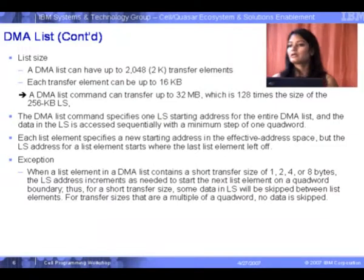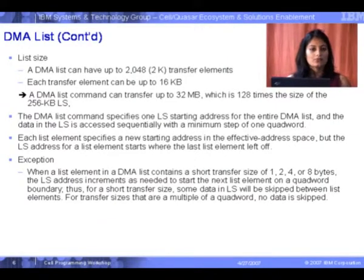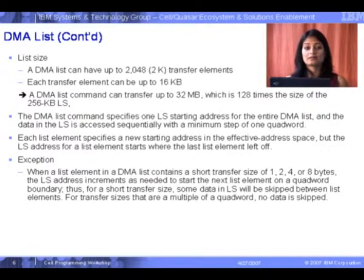It's a streaming model because the local store size is only 256 kilobytes, so you can't fit all that data in the local store. But via a DMA list, it can access as much as 32 megabytes of data, collected asynchronously in the background. You specify the starting effective address where data collection begins, and that offset keeps incrementing. Any DMA list can transfer 1, 2, 4, 8 or a multiple of 16 bytes, up to a total of 16 kilobytes per list element.